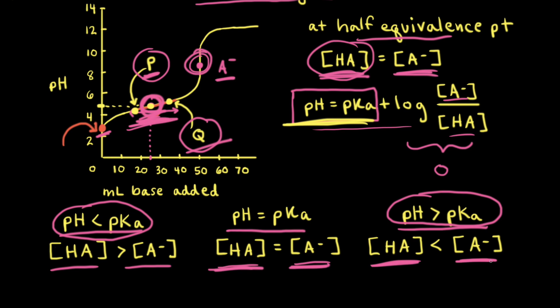Finally, let's discuss why a buffer forms on this titration curve. At the start, we have almost all weak acid and no buffer. As base is added, the weak acid is converted into its conjugate base. When there are significant amounts of both the weak acid and its conjugate base, a buffer solution exists — visible as the region of slowly changing pH around the half equivalence point. As more base is added, the concentrations shift until we no longer have a buffer, and the pH changes more dramatically. The buffer region is only right around the half equivalence point on the titration curve.